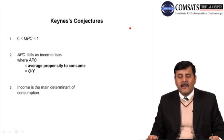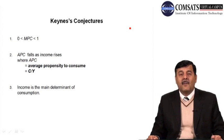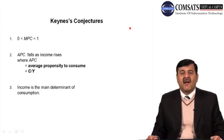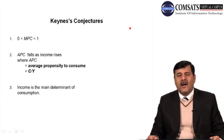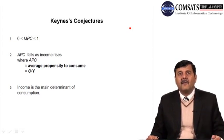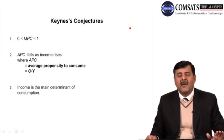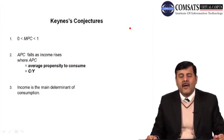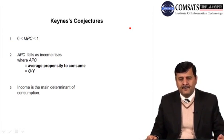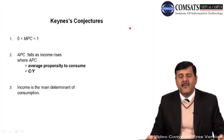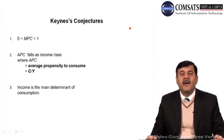So there are three conjectures in Keynes' consumption function: first, MPC lies between zero and one; second, APC falls as income rises; and third, income is the main determinant of consumption.